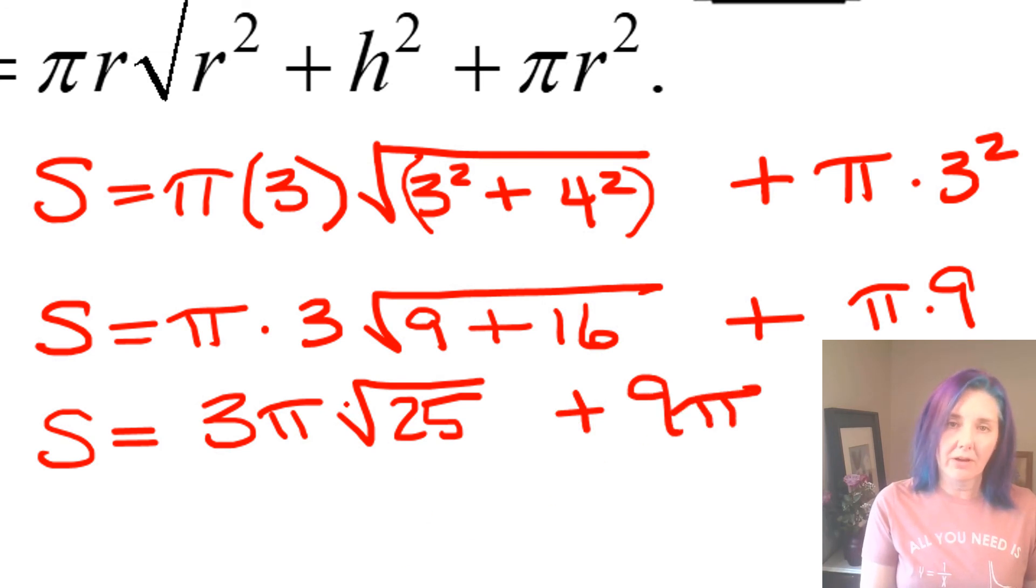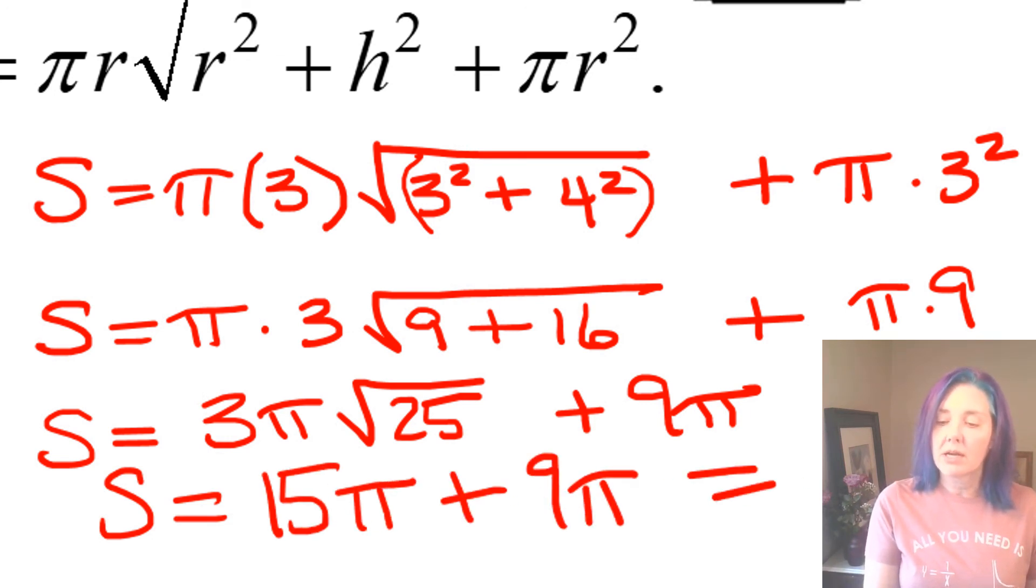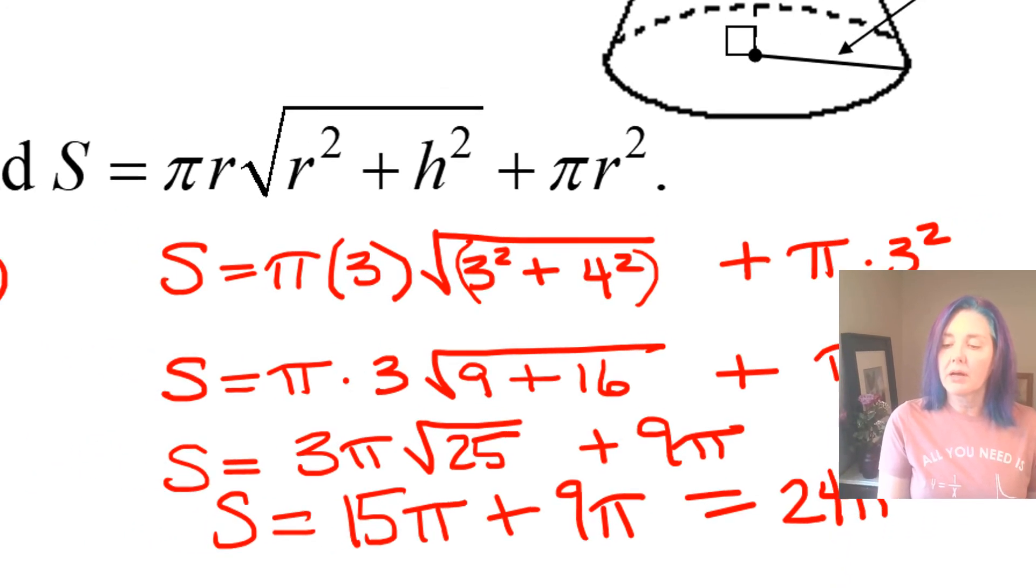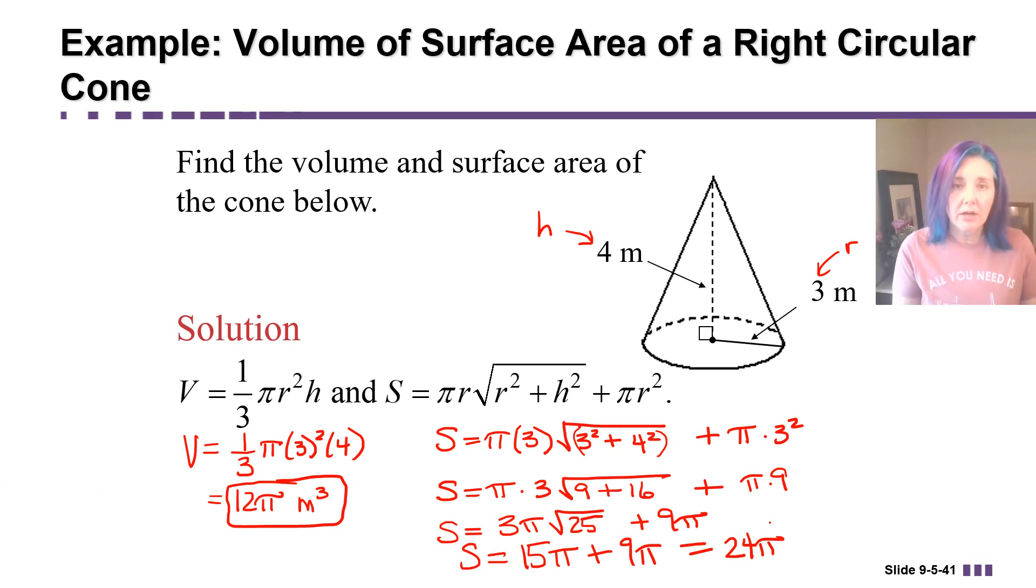Well the square root of 25 is five and five times three is 15, so that's 15 pi plus nine pi, which adds up to 24 pi's all together. And what are the units for area? Square units, that's right.